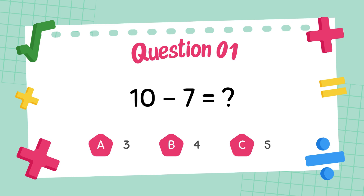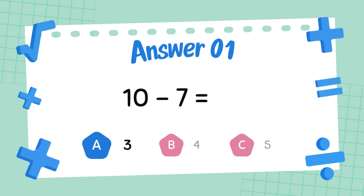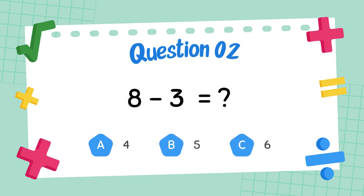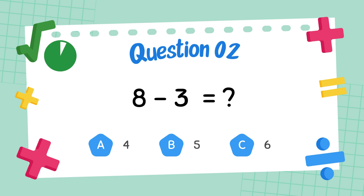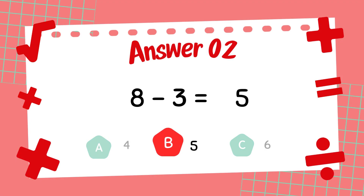What is 10 minus 7? The answer is 3. What is 8 minus 3? The answer is 5.